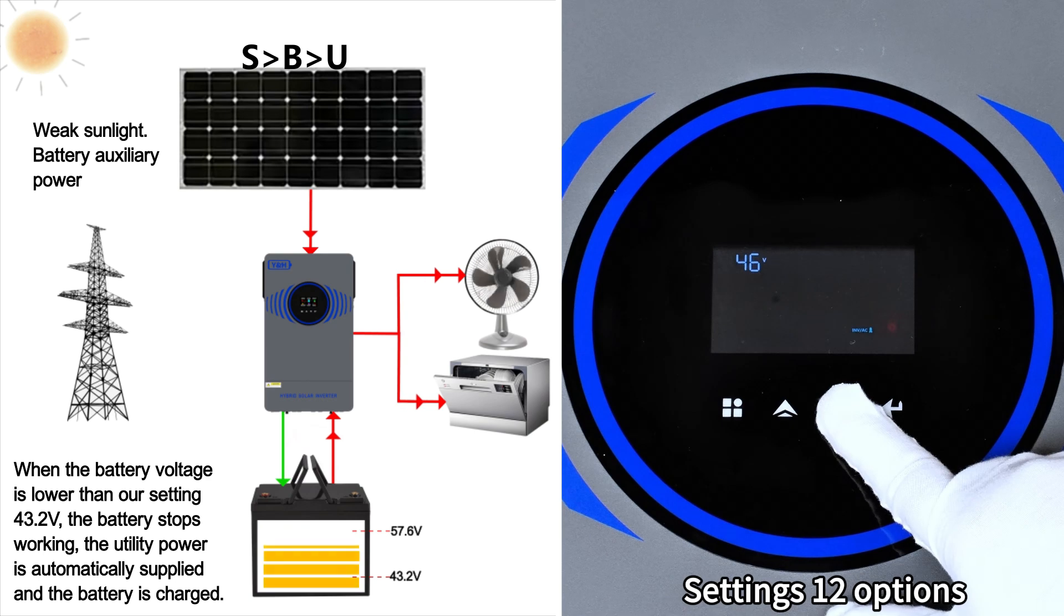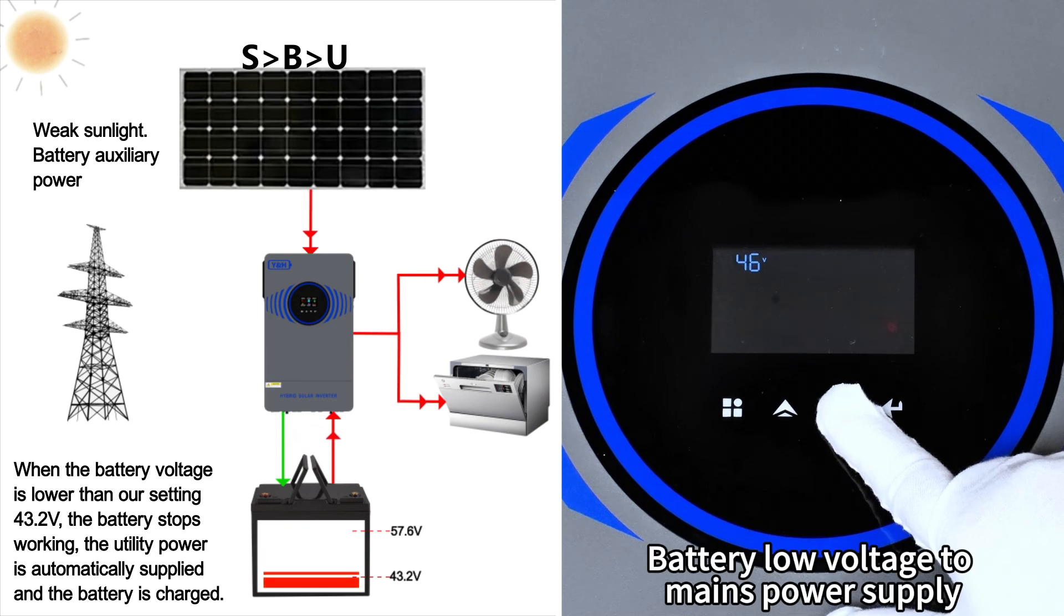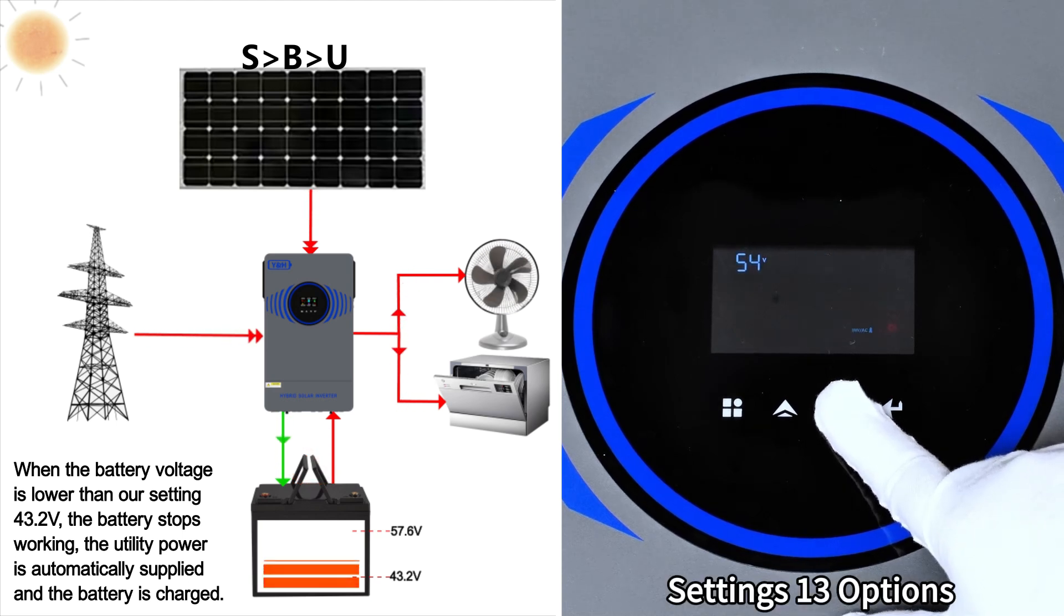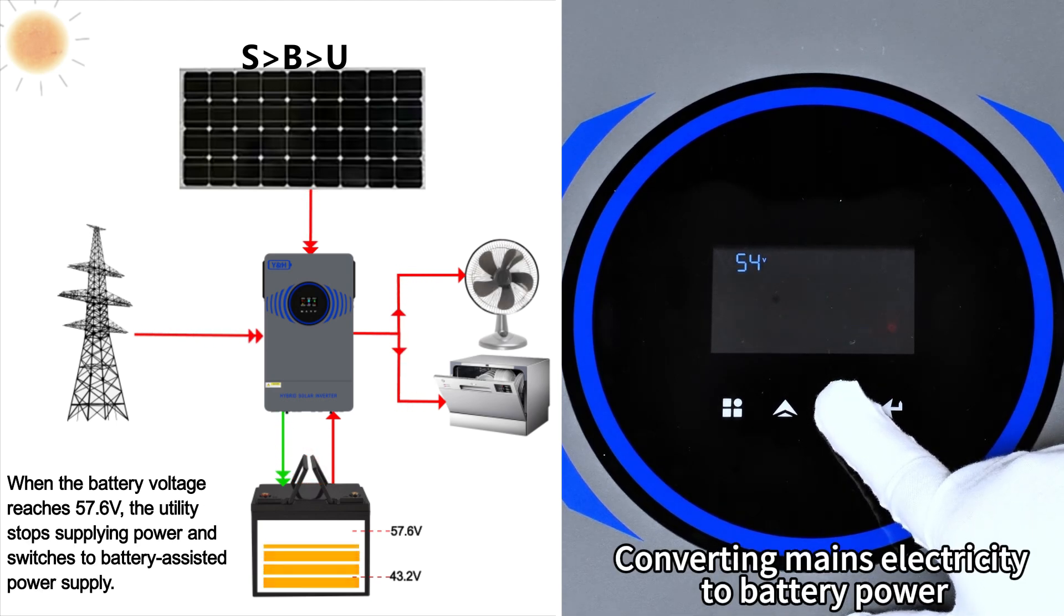Settings 12 options: Battery low voltage tool means power supply. Settings 13 options: Converting mains electricity to battery power.